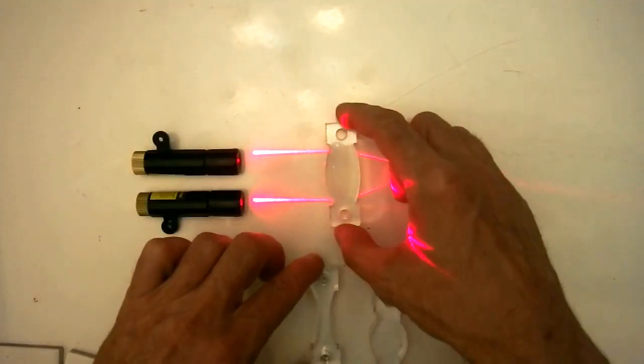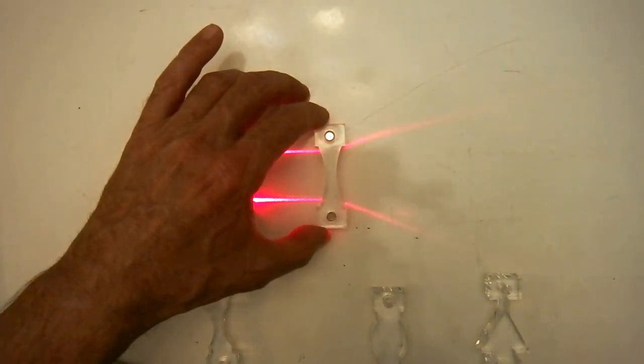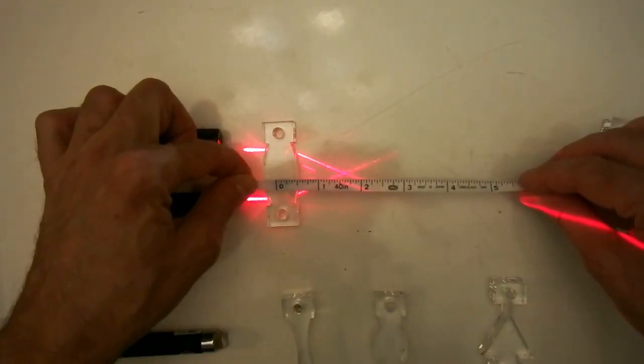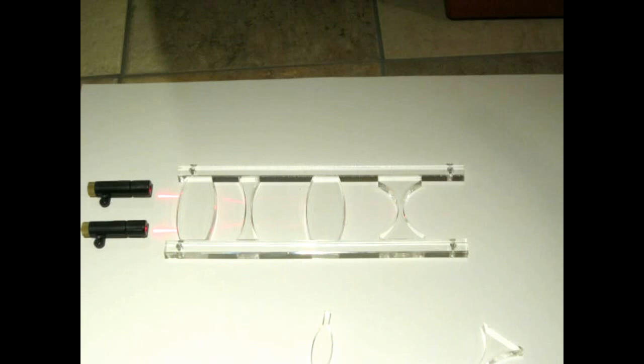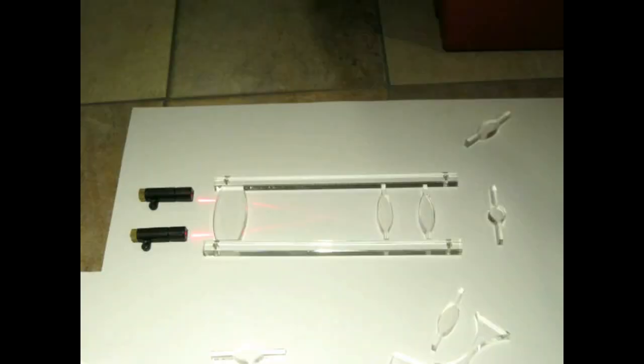Of course, you can't do actual optics with these, but if you're careful, you can ray trace through three or four profiles to show how things work, such as this Galilean telescope, or this Keplerian telescope.